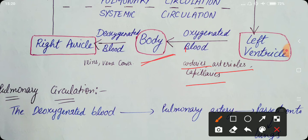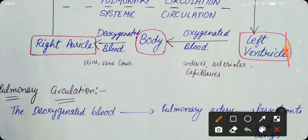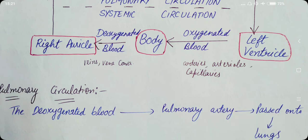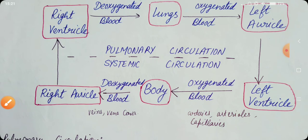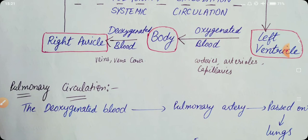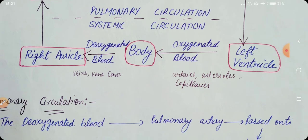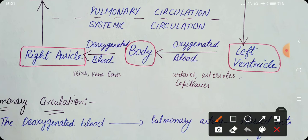Body में oxygenated blood जाता है, लेकिन body में से जो deoxygenated blood बनता है, वो with the help of veins and venacava right auricle में enter करेगा। तो pulmonary circulation में oxygenated blood बना, लेकिन in case of systemic circulation, deoxygenated blood बनता है — यही difference है।